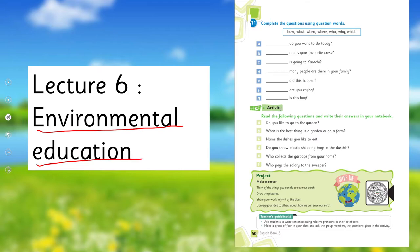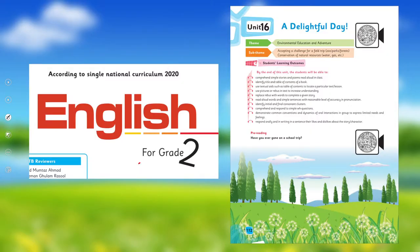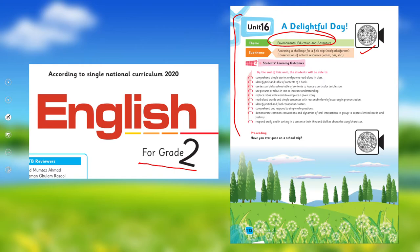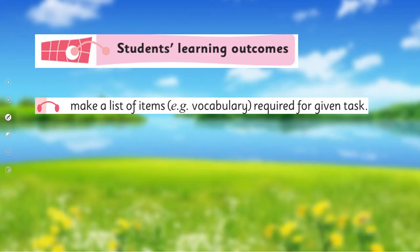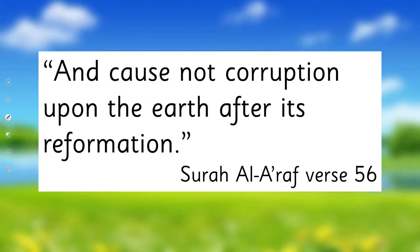This is our topic. Before this, in English for Grade 2, we have already learned about environment. I hope you remember. In this unit we have discussed a lot. If not, you may watch this video lecture again. We are going to learn further and will cover the SLO: to make a list of items — for example, vocabulary required for a given task. This is our today's SLO.